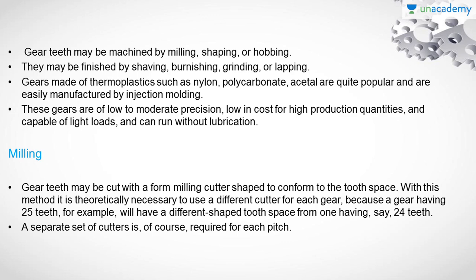Gears made of thermoplastic — which we may have seen in toys and some applications where low load-bearing structures are needed — such as nylon, polycarbonate, and acetal, are quite popular and are easily manufactured by injection molding. They can also be 3D printed. This is an easy way to form gears made of thermoplastics. The applications and advantages of gears made of thermoplastics are given here.